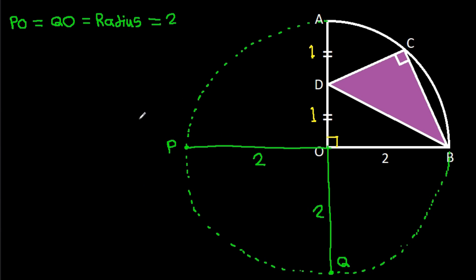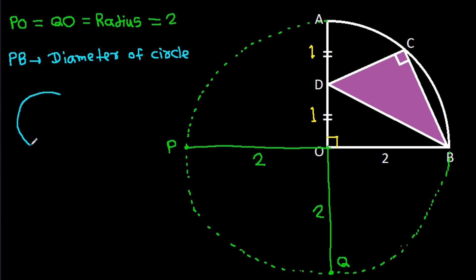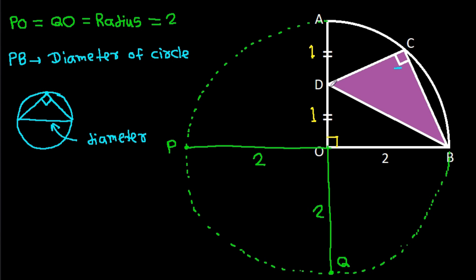Now PB is the diameter of the circle. We know that in any circle, a diameter makes an angle of 90 degrees on the circle. Since angle BCD is 90 degrees, that means if we extend CD, it will pass through point P, and this angle will be 90 degrees.